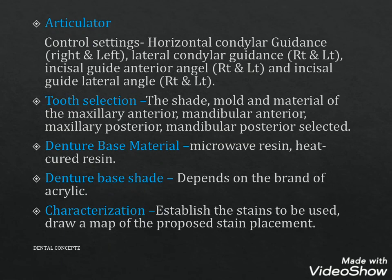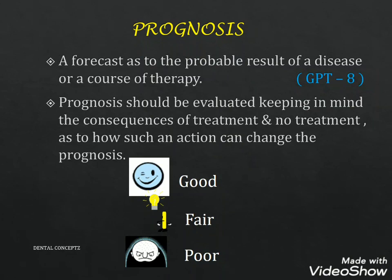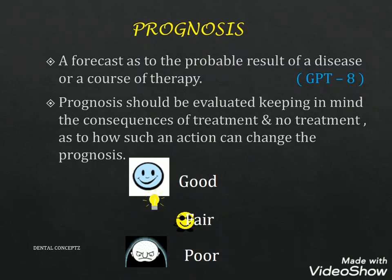Treatment planning also includes choice of articulator, teeth selection including shade, mold and material of maxillary anterior, mandibular anterior, maxillary posterior and mandibular posterior teeth. Denture base material — microwave resin or heat cure resin — and denture base shade depend on the brand of acrylic. Characterization establishes the stains to be used and involves drawing a map of the proposed stain placement. Prognosis is a forecast of the probable result of a disease or course of therapy, evaluated considering consequences of both treatment and no treatment, and classified as good, fair or poor.